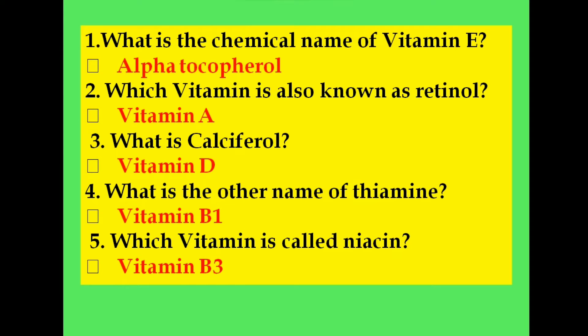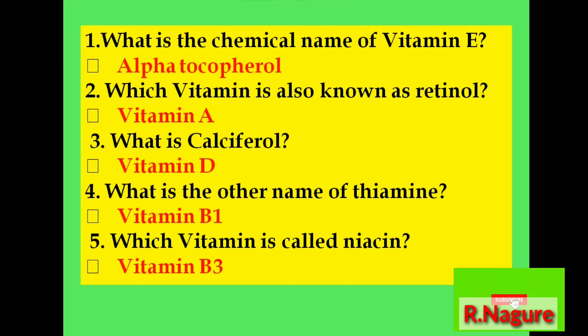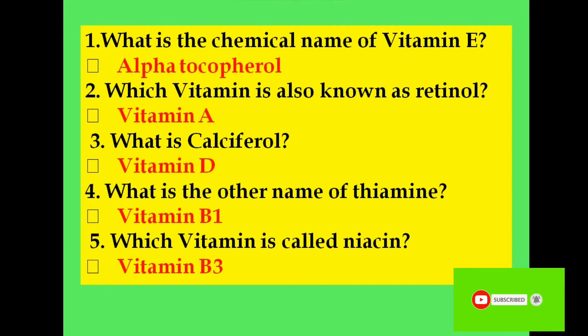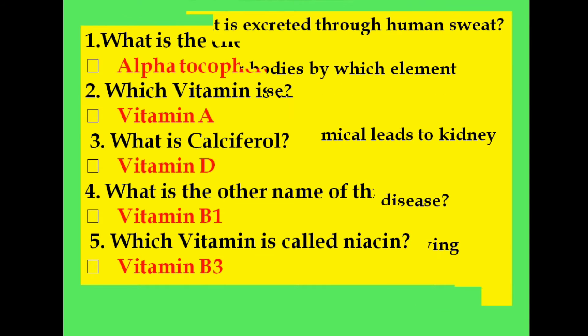What is the chemical name of vitamin E? Alpha tocopherol. Which vitamin is also known as retinol? Vitamin A. What is calciferol? Vitamin D. What is the other name of thiamine? Vitamin B1. Which vitamin is called niacin? Vitamin B3.